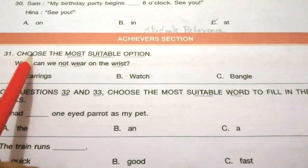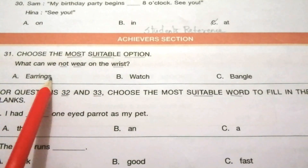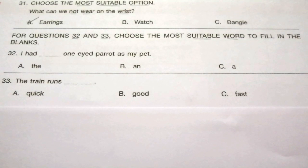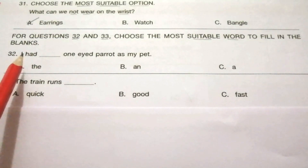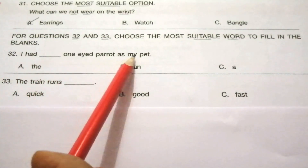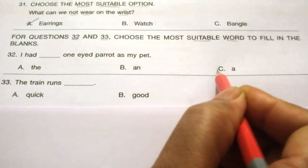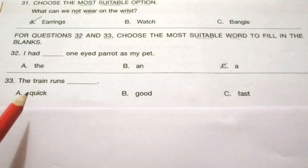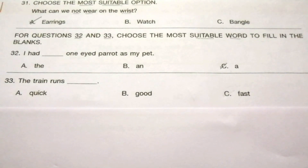Achiever Section. Question 31: choose the most suitable option. What can we not wear on the wrist? Earrings, watch, bangle. The answer is A — earrings. Question 32: I had a one-eyed parrot as my pet. Options: the, an, a. The answer is C — a. Question 33: the train runs fast. Options: quick, good, fast. The answer is C — fast.